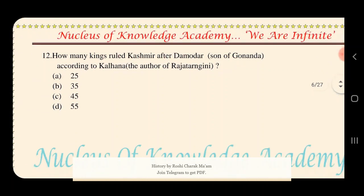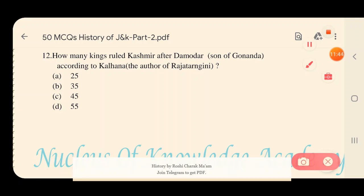Question 12: According to Kalhana, how many kings ruled Kashmir after Damodar — who was the son of Gonanda? Options: A) 25, B) 35, C) 45. The right answer is option B — 35 kings ruled Kashmir after Damodar.